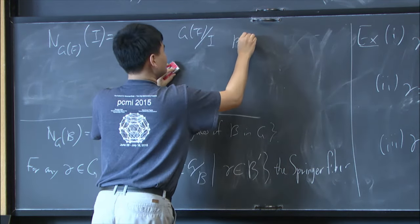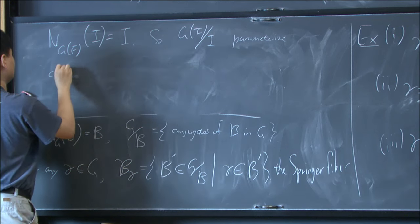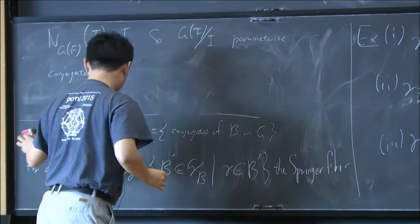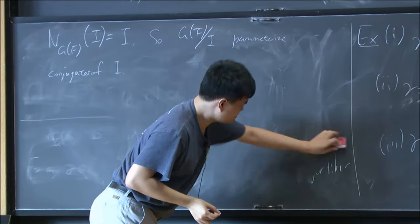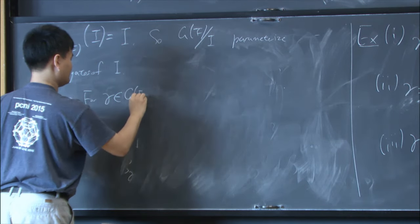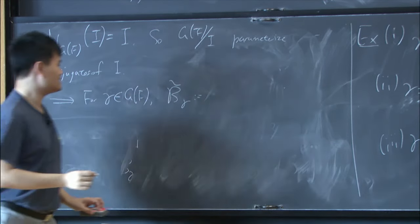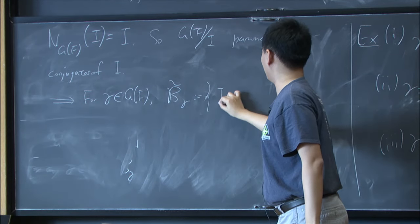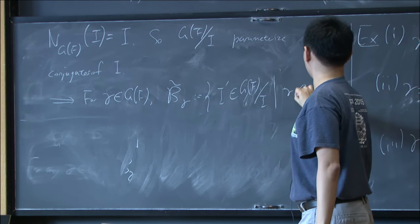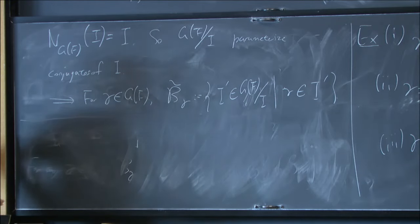So G(F) mod I can parameterize conjugates of I. So we can consider a similar variety. So for any gamma inside G(F), we consider a similar variety, which is the so-called affine Springer fiber, defined to be those conjugates of I in G(F) mod I that contains this gamma.